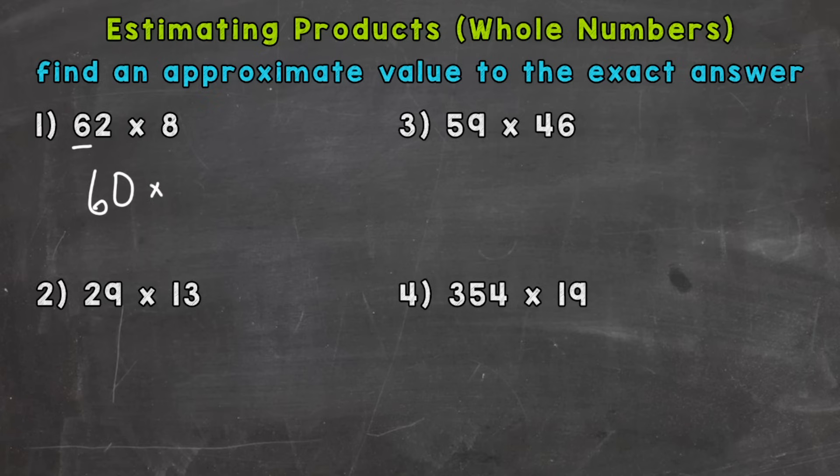Now 8 is a one-digit number, so I'm going to keep it as is. 60 times 8 is going to give us our estimate. So 6 times 8 is 48. And let's place our 0 back on the end there in order to push everything to the correct place value and give us the correct answer.